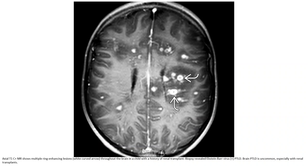T1 contrast-enhanced MRI shows multiple ring-enhancing lesions throughout the brain in a child with history of renal transplant. This was confirmed as Epstein-Barr virus post-transplant lymphoproliferative disorder. Brain PTLD is uncommon, especially with renal transplant.